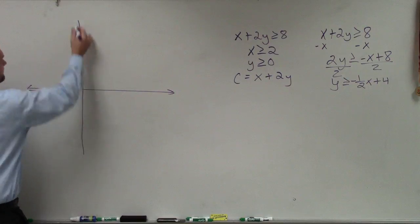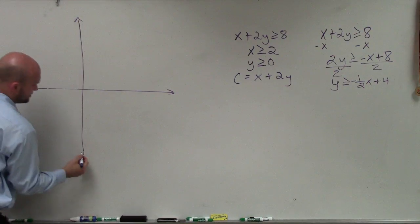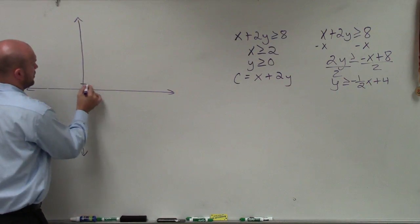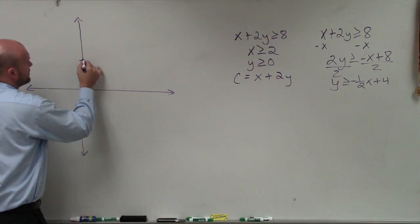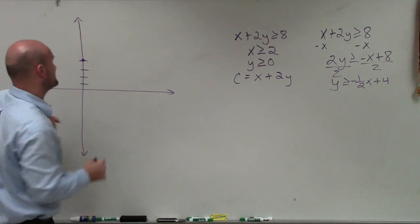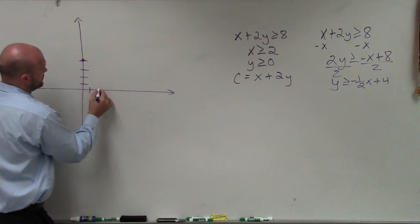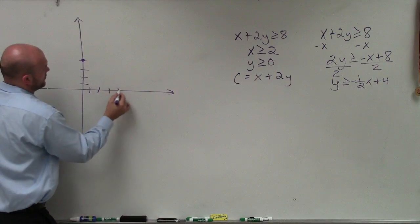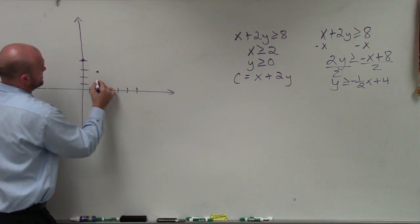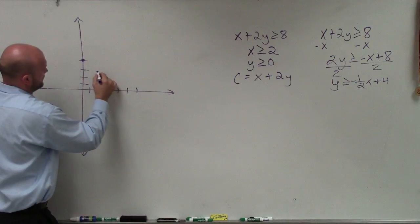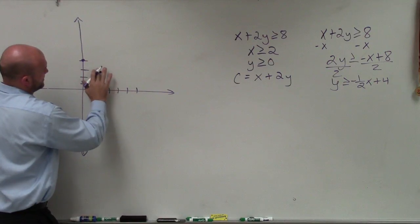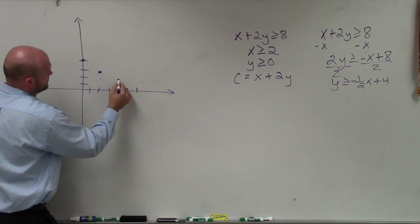Let's go ahead and graph that function first. I'm going to go up to 4 on the y-axis — 1, 2, 3, 4. My slope is telling me to go down 1 over 2, so down 1 over 2, and continuing down 1 over 2 to plot additional points along the line.